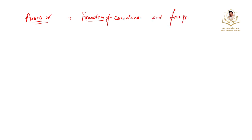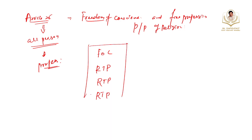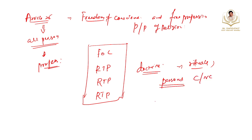Article 25 provides the right to practice and propagate religion. The fundamental right under Article 25 states that all persons are equally entitled to freedom of religion — particularly freedom of conscience and the right to freely profess, practice, and propagate religion. This covers religious beliefs and doctrines as well as religious practices such as rituals. These rights are available to all persons — citizens as well as non-citizens — but are subject to public order, morality, and health.